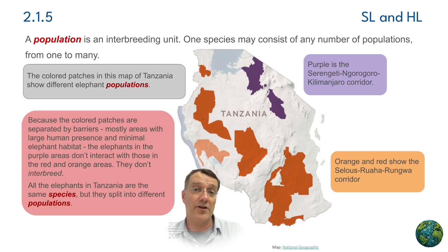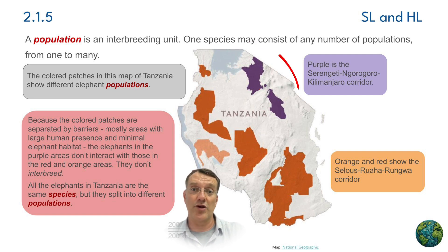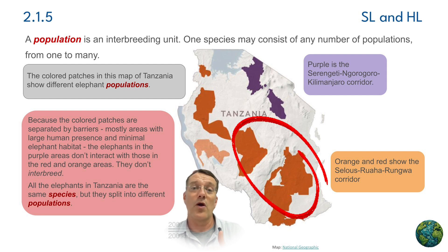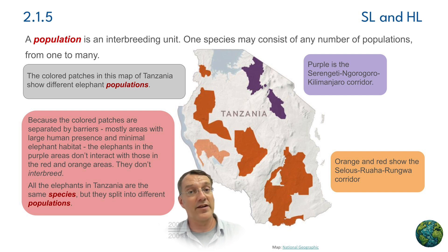However, because of the road network and agricultural areas and places with human populations like cities that separate the purple zones from the orange zones, elephants from the purple areas don't interact with elephants in the orange areas. Therefore, the elephants in the purple zones are considered one population of African elephants, and the elephants in the orange zones are considered a different population, even though they're all the same species — they're not in the same place at the same time, so they can't interbreed.